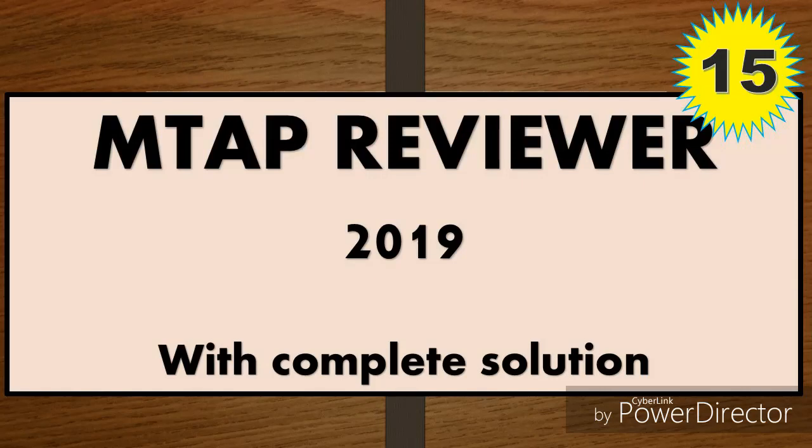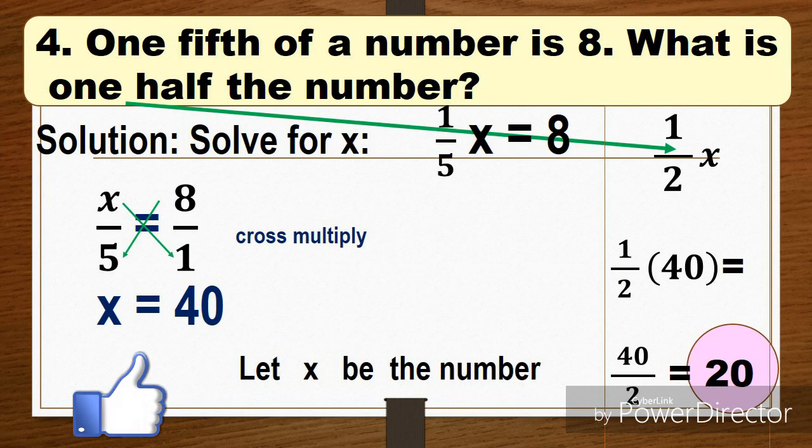Okay, number 15 MTA reviewer 2019 with complete solution and explanation. Let's start. One-fifth of a number is eight. What is one half the number? One-fifth is one over five. A number is a number which...